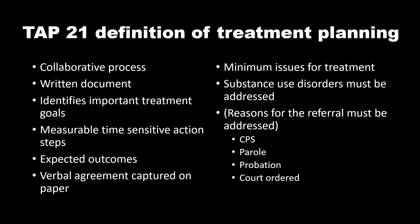TAP 21 provides a useful definition of treatment planning. It is a collaborative process. It includes a written document which identifies important treatment goals. They must be measurable, time-sensitive action steps, and we need to know what the expected outcomes are. Verbal agreement with the client and the counselor is often captured on paper.